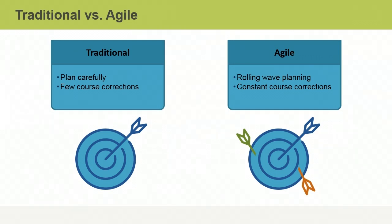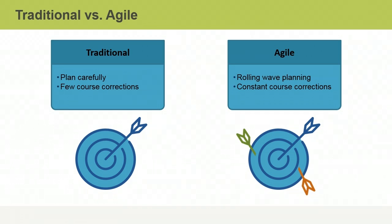And if our customer decides that they would like to move the target, we welcome that change and adjust to it because it will satisfy the customer in the end. In Agile project management, we plan for the soonest activities now and we worry about the details of the later iterations when the time comes. This is called rolling wave planning. Rather than over-planning, it is more important to quickly start creating value through project work. We also want to get feedback so we can make changes and constantly correct our course until we are on track with hitting the target and achieving customer satisfaction.